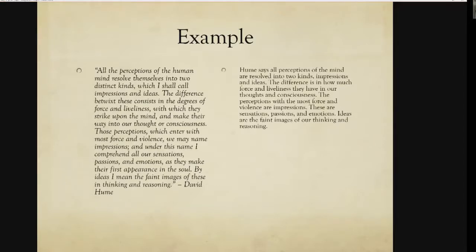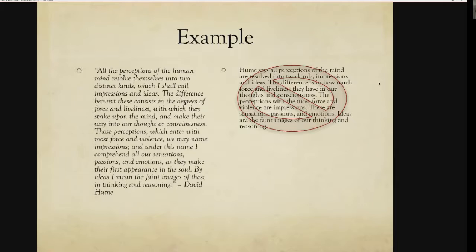Someone might try to paraphrase this as: 'Hume says all perceptions of the mind are resolved into two kinds — impressions and ideas. The difference is in how much force and liveliness they have in our thoughts and consciousness. Perceptions with the most force and violence are impressions — these are sensations, passions, and emotions. Ideas are the faint images of our thinking and reasoning.' Do we now understand what he's talking about? Is this a really good version? The answer is no — because I'm still using the same words and I'm not really clear what Hume was talking about.